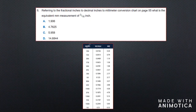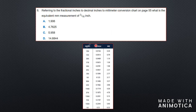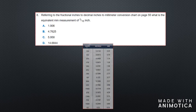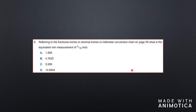Question eight refers to the fractional inches, decimal inches, and millimeter conversion chart. What they are asking for is fractional inches to decimal inches to millimeters. The chart has fractional inches here, decimal here, and millimeters here. If you need to convert three sixteenths of an inch to millimeters, look for three sixteenths on the conversion chart and go over to the millimeter portion — that way you know how many millimeters equal three sixteenths of an inch.